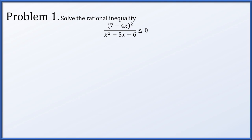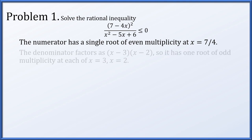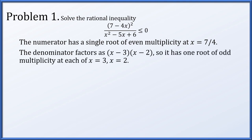We have a rational function being compared to zero. The numerator has a single root of even multiplicity because that factor is being squared, and that root is at x equals 7/4 — found by setting the numerator equal to zero. The denominator factors as (x minus 3)(x minus 2), giving roots of odd multiplicity at x equals 3 and x equals 2.